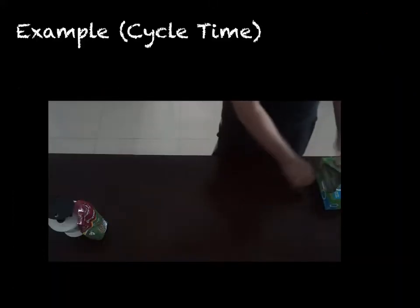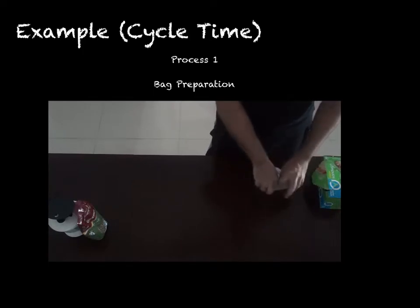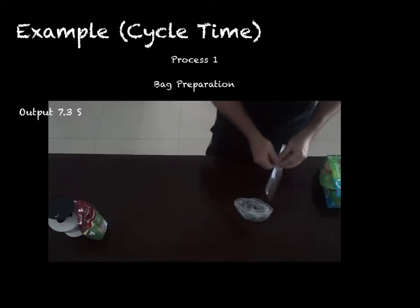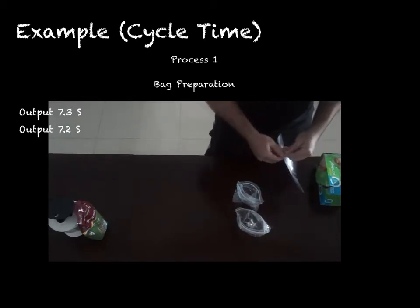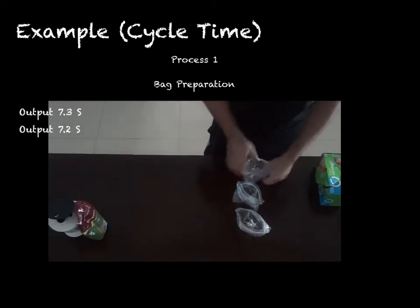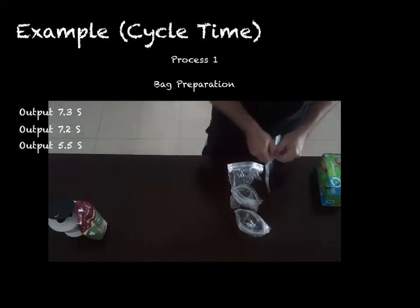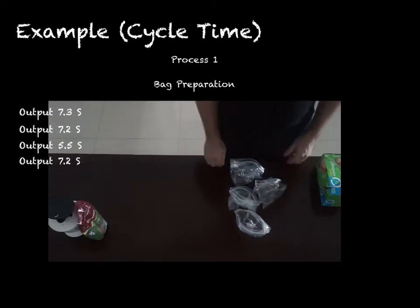Now let's start by looking at each of the cycle times. Let's look at process one — the bag preparation. The average cycle time for this process is 6.8 seconds.